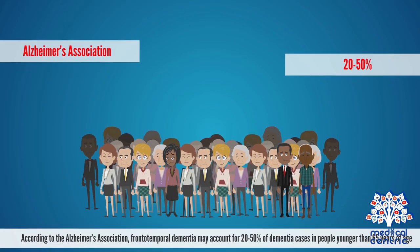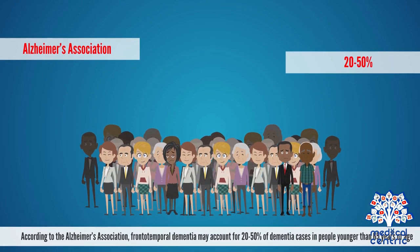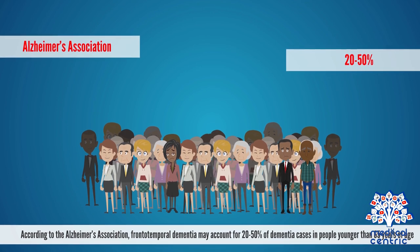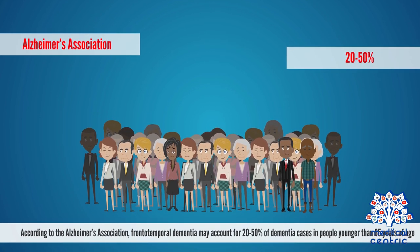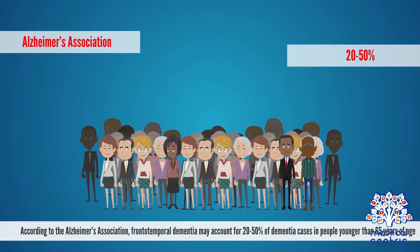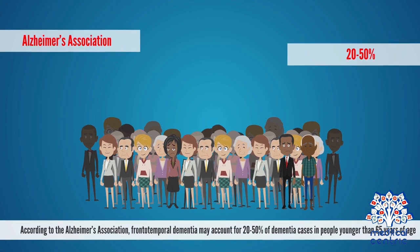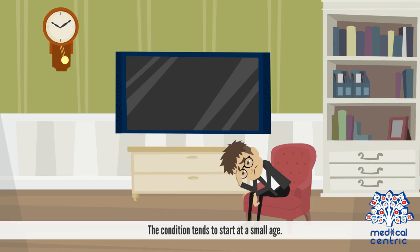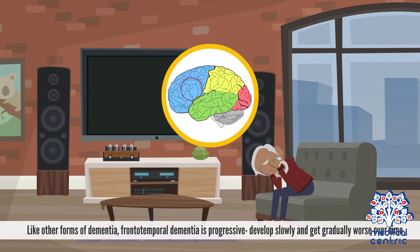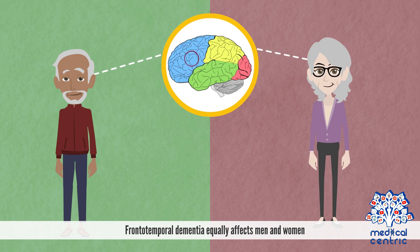According to the Alzheimer's Association, frontotemporal dementia may account for 20-50% of dementia cases in people younger than 65 years of age. The condition tends to start at a younger age. Like other forms of dementia, frontotemporal dementia is progressive, developing slowly and getting gradually worse over time. Frontotemporal dementia equally affects men and women.